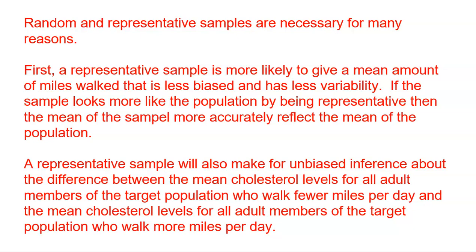This is not an experiment because they didn't make some people walk less miles and others walk more — they just observed 100 people and what they walk, then split them into top 50 walkers and bottom 50 walkers. We want all 100 people to be representative because then they better represent the population, giving us better data to make inferences about that population.